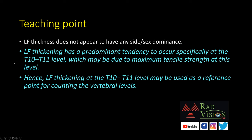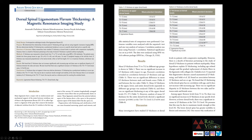Ligamentum flavum thickening does not appear to have any side or sex predominance. It has a predominant tendency to occur specifically at T10-T11 level, which may be due to maximum tensile strength at this level. Cord edema and compressive myelopathy also most commonly occur at T10-T11. Therefore, ligamentum flavum thickening at T10-T11 may be used as a reference point for counting vertebral levels. A published journal on dorsal spinal ligamentum flavum thickening confirms the highest mean standard deviation and statistically significant increase at T10-T11 level.